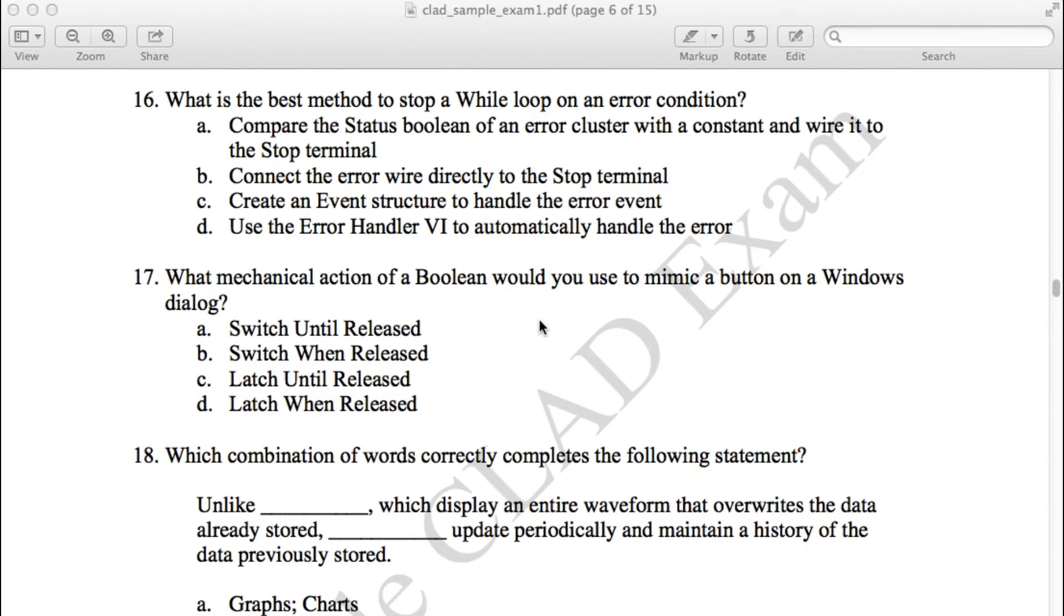C means create an event structure to handle the error event. This is not actually clear what is going to happen over there, so C is incorrect.